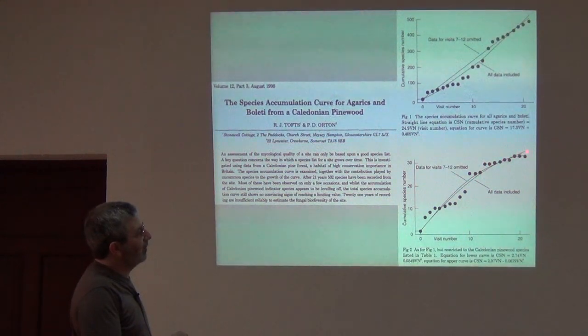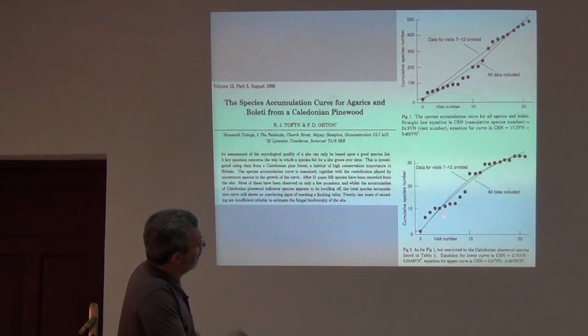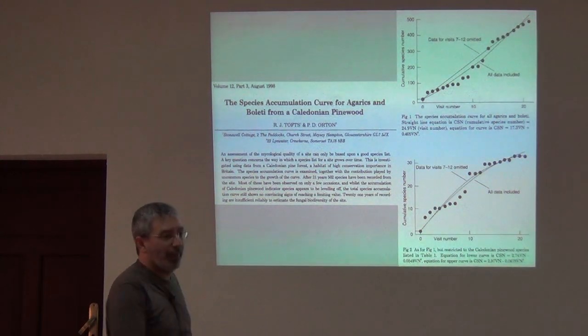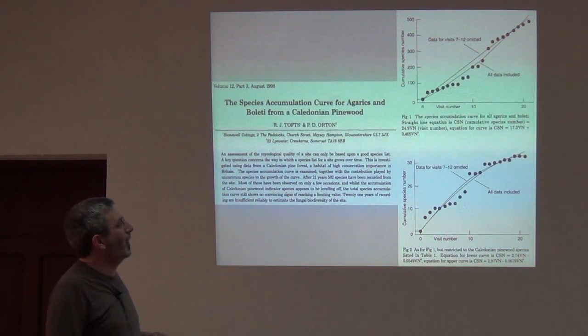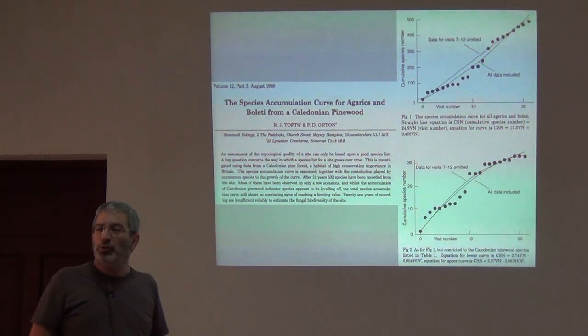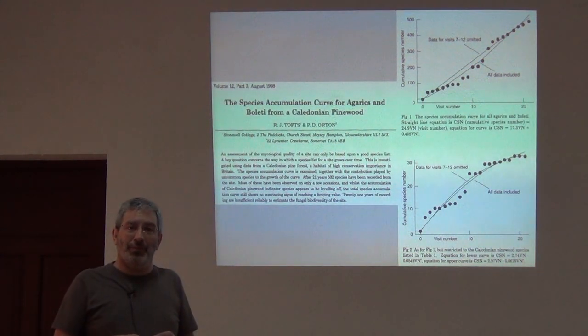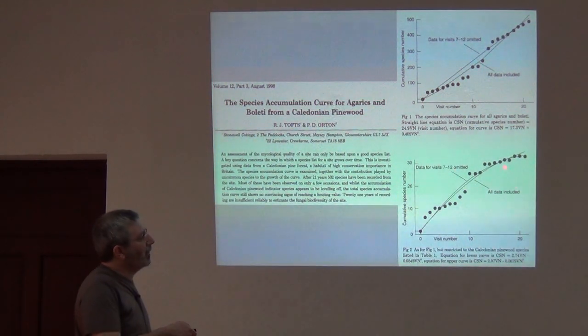Very messy accumulation curve, huge jump, but then there's this comment about data for visits 7 to 12 omitted. Oh no, that's fitting the curve, I see. So it looks like for some reason they didn't like these samples in the middle. Let's not go into that. But the point is simply, if you saw this accumulation, you should be worried about heterogeneity.